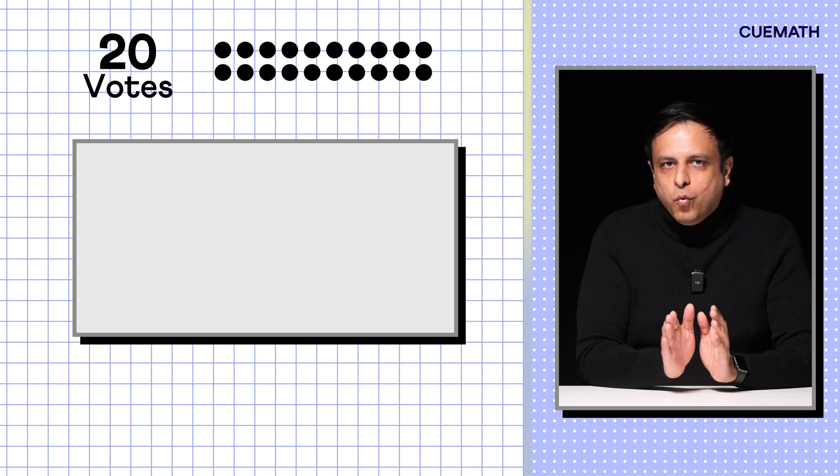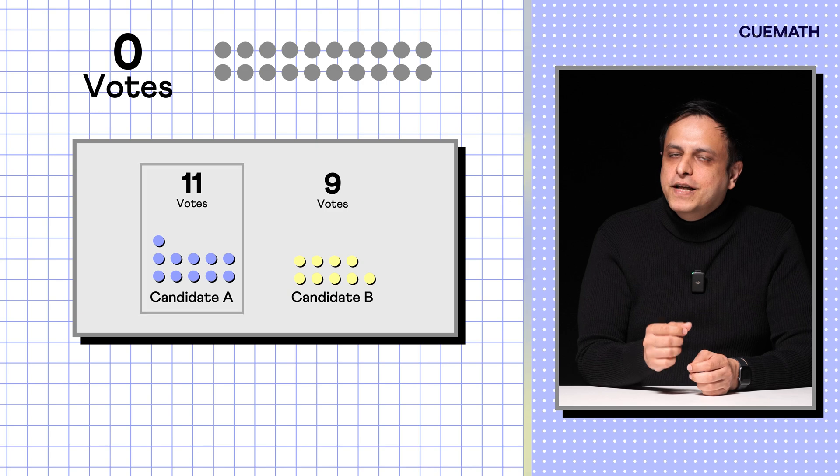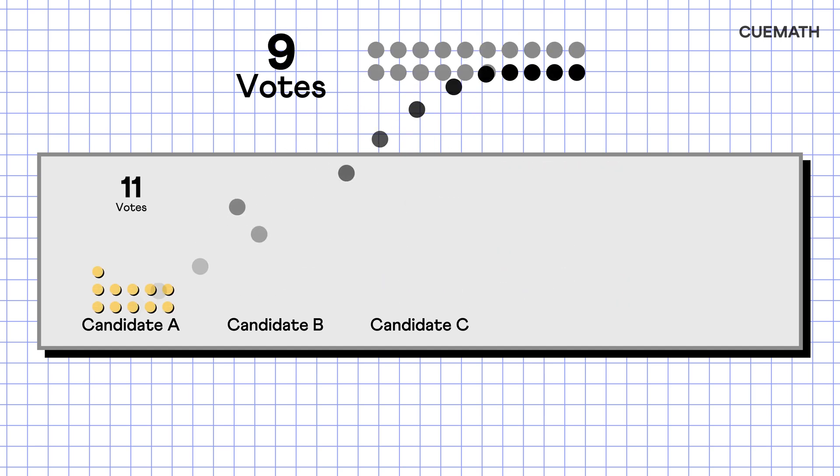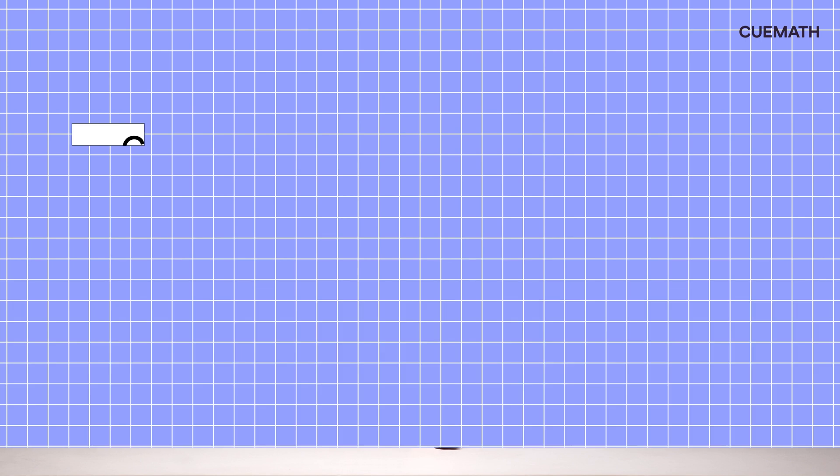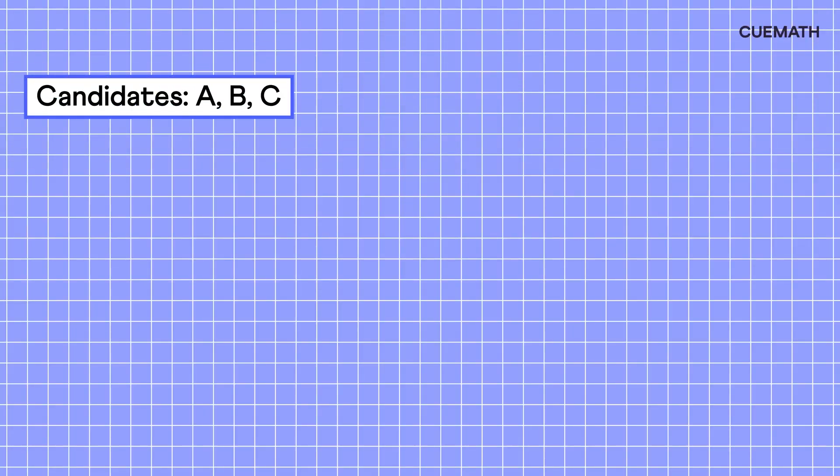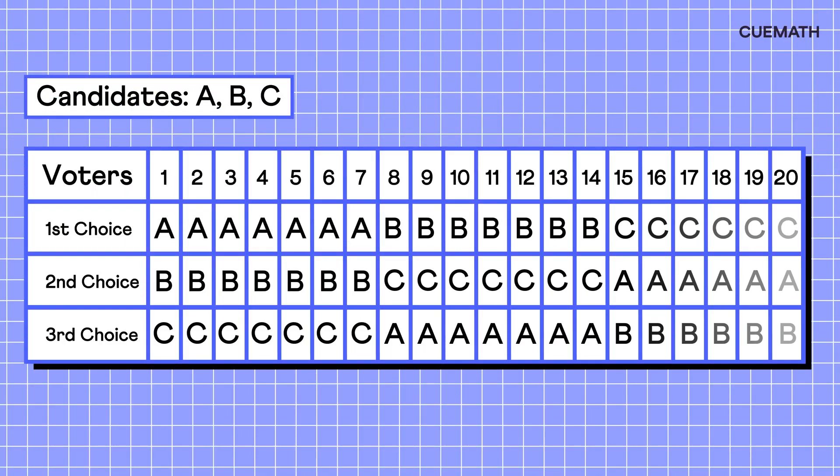Now, voters choose between A and B, giving one of them a majority. However, with more candidates, eliminating the lowest one and holding a re-election multiple times can be impractical. A better approach is ranked voting, where voters rank candidates by preference. It's like holding multiple elections, but all at once. For example, with 3 candidates and 20 voters, each ranks their choices.